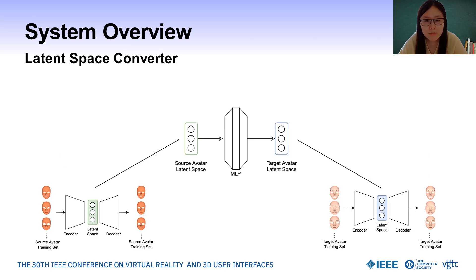To establish the transformation from the source latent space to the target latent space, we train a multi-layer perceptron model as a transfer function. The training dataset consists of pairs of source and target models with the same expression. This allows us to obtain the latent code of a certain expression of the source model by encoding through the VAE model. Then, we use the MLP model to predict the latent code of the target model, and finally decode the target latent code to generate the target avatar model with the same expression.